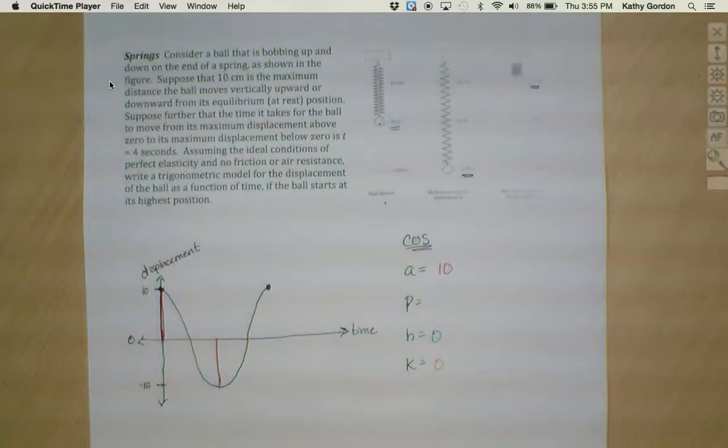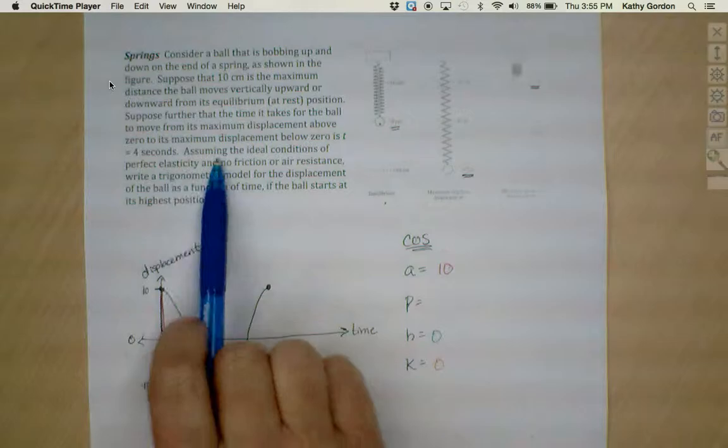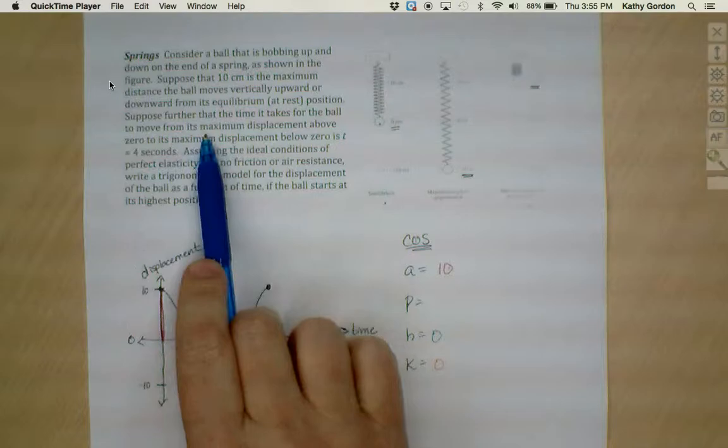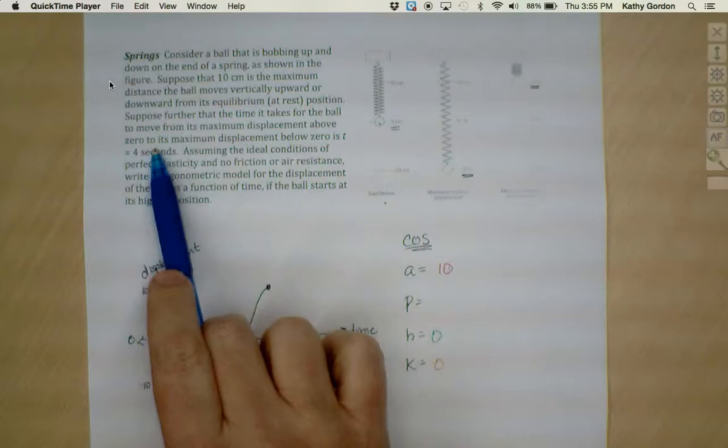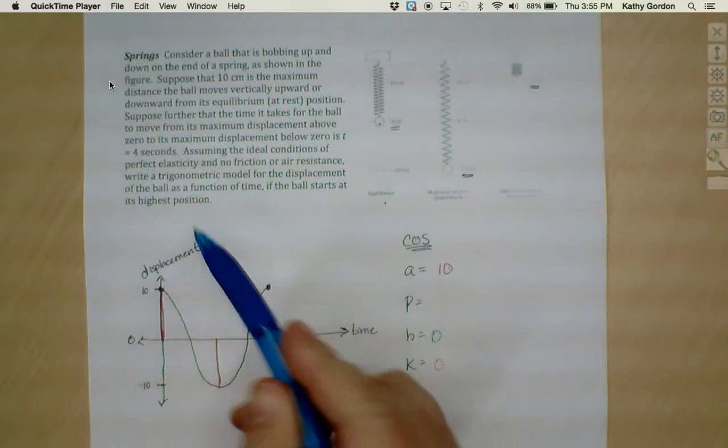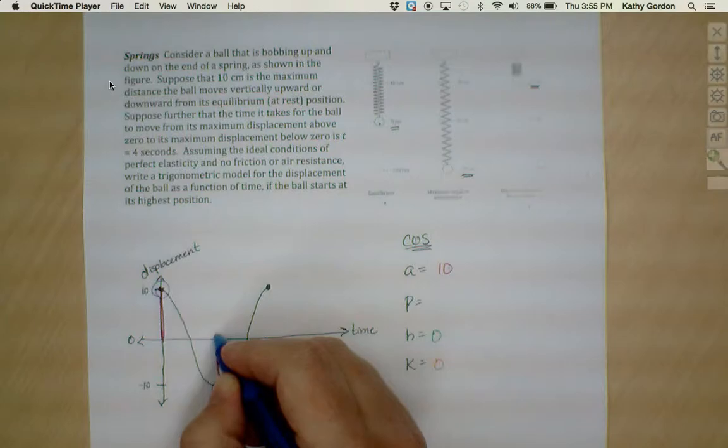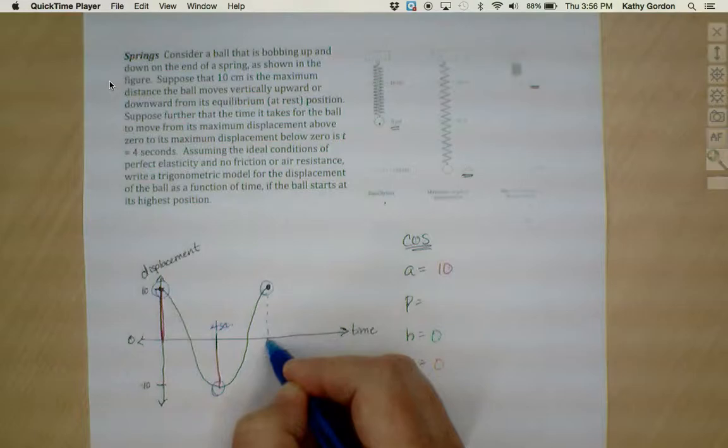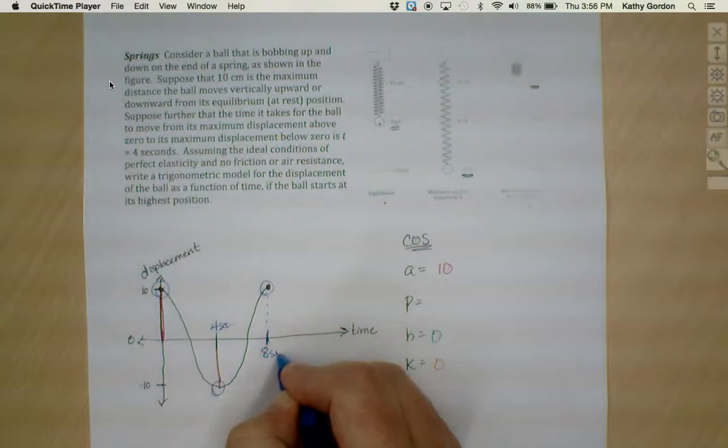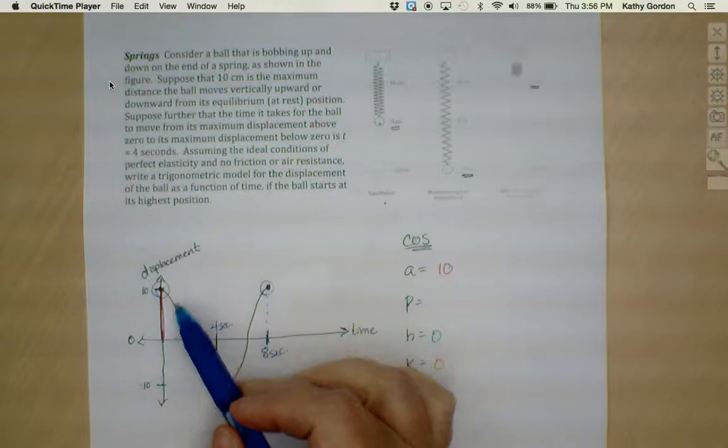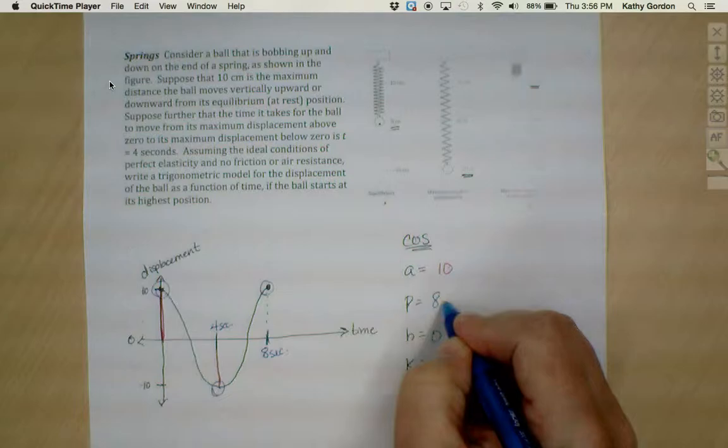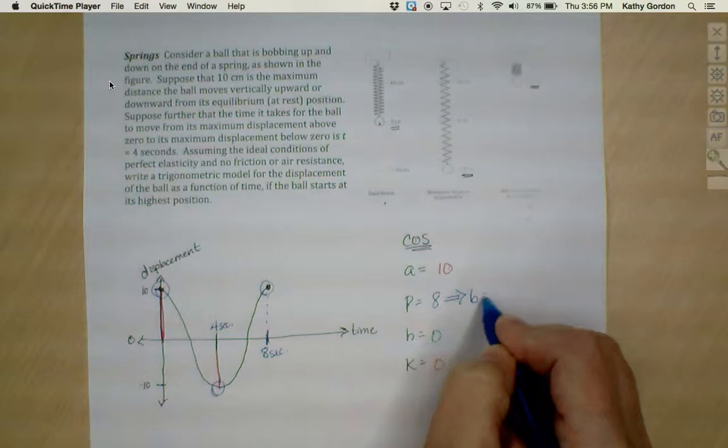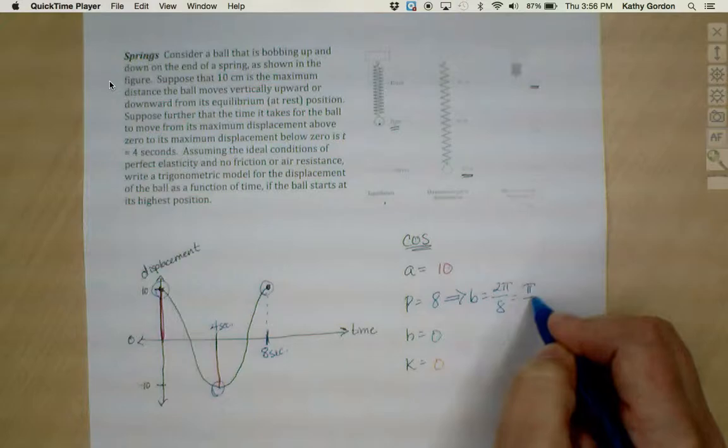Now as far as our p-value goes, the time information we were told is that the ball is going to move from its maximum displacement above zero to its maximum displacement below zero in four seconds. So that means from here to here took four seconds. Which means if I then go back up again to get back to here to complete one full circle, it would have taken a total time of eight seconds. So that means my period to get through one full rotation is going to be eight seconds. That will give me my b-value by taking two pi over eight and I get pi over four.